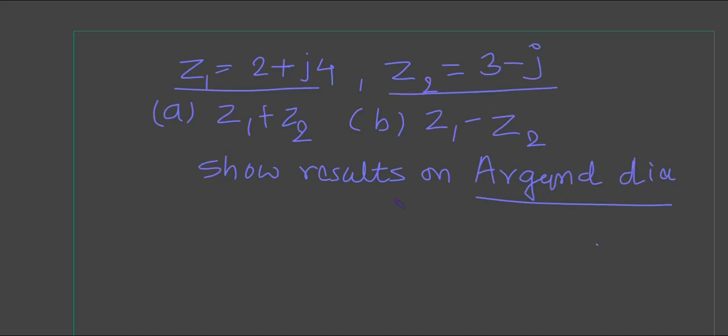For this kind of question, first we have z1+z2. So z1+z2 can be written as 2+j4 plus 3-j. Now simplify this - we get 5+j3. Now you have to place this result on the Argand diagram.